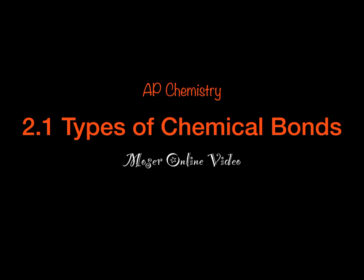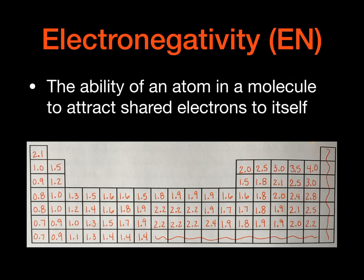Welcome to this video on types of chemical bonds. One of the really important things when we get to bonding is actually the periodic trend in electronegativity values. Electronegativity is the ability of an atom in a molecule to attract shared electrons to itself.